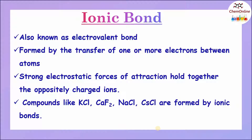First, let us see what is meant by an ionic bond. This type of bond is also known as electrovalent bond and it is formed by the transfer of one or more electrons between atoms. In an ionic bond, strong electrostatic forces of attraction hold together the oppositely charged ions.